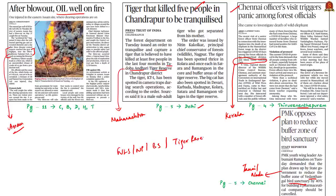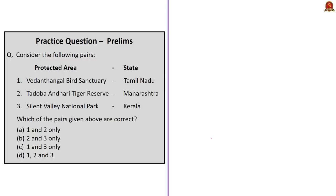When you come across news articles mentioning protected areas like wildlife sanctuaries, national parks, bird sanctuaries, or tiger reserves, try to know in which state they are located. The practice question gives three pairs: Vedanthangal Bird Sanctuary, Tadoba Andhari Tiger Reserve, and Silent Valley National Park with their respective states. All three pairs are correctly matched, so the correct answer is option D: 1, 2, and 3.